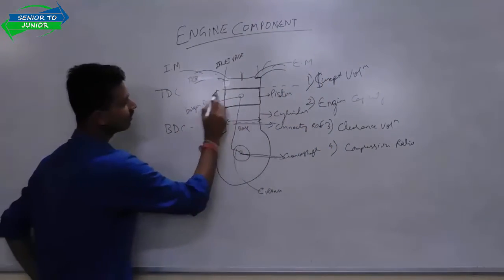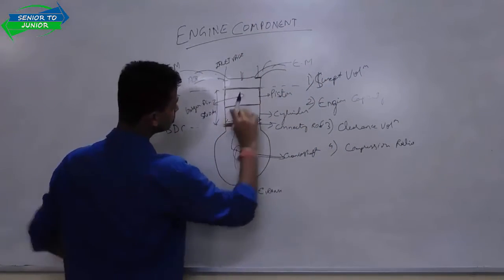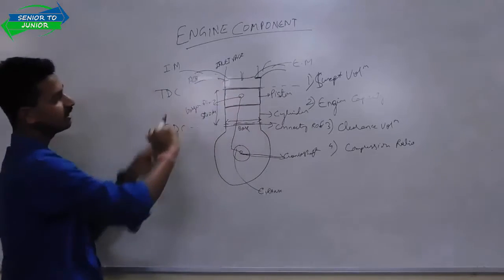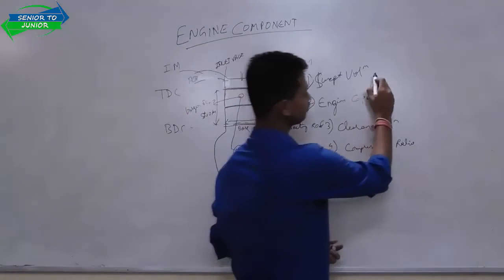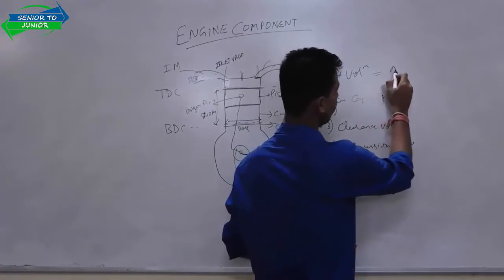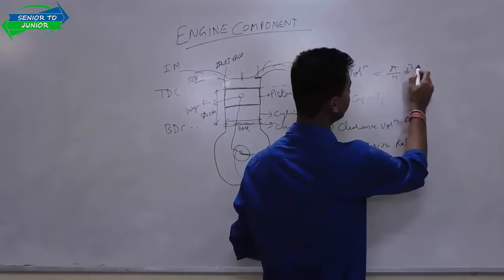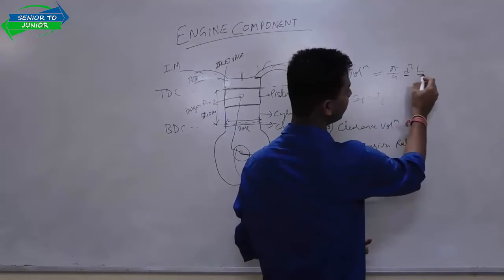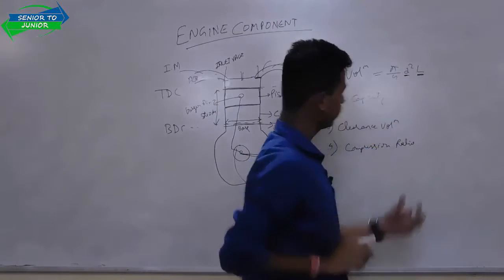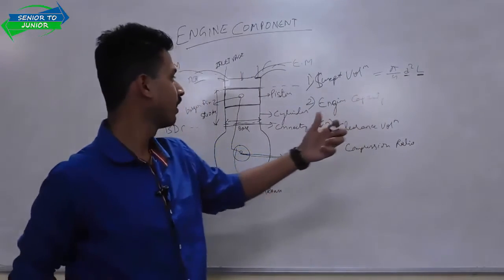For example, the piston travels from TDC to BDC. Since the cylinder is cylindrical, swept volume equals pi by 4 times D squared times L, where D is your bore and L is your stroke. This is called swept volume.